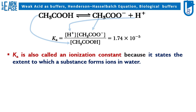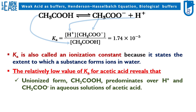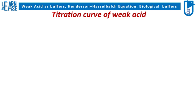The relatively low value of Ka for acetic acid reveals that the unionized form, CH3COOH, predominates over H+ and CH3COO- in aqueous solutions of acetic acid. Viewed another way, CH3COO-, the acetate ion, has a high affinity for H+.